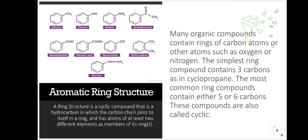Aromatic ring structures is a ring structure that is a cyclic compound that is hydrocarbon in which the carbon chain joins to itself in a ring and has atoms of at least two different elements as member of its rings. So that's how aromatic ring structures look like.